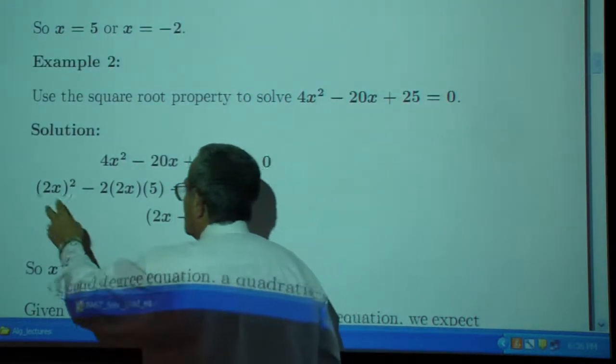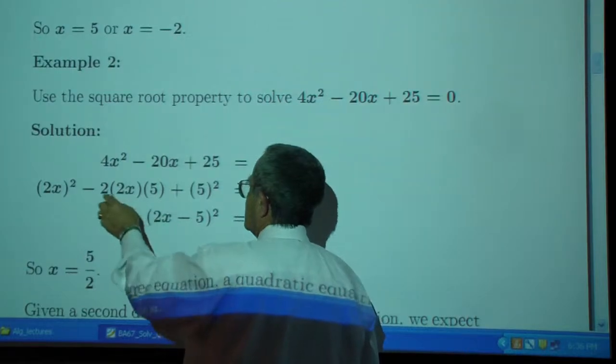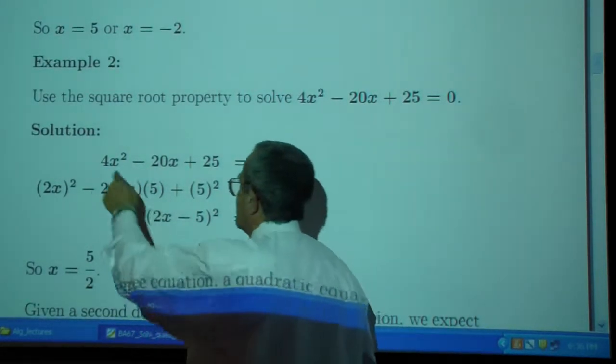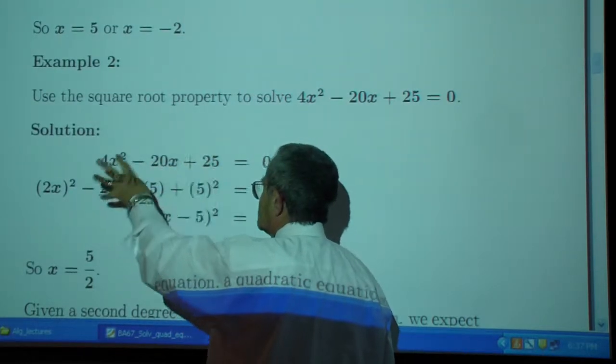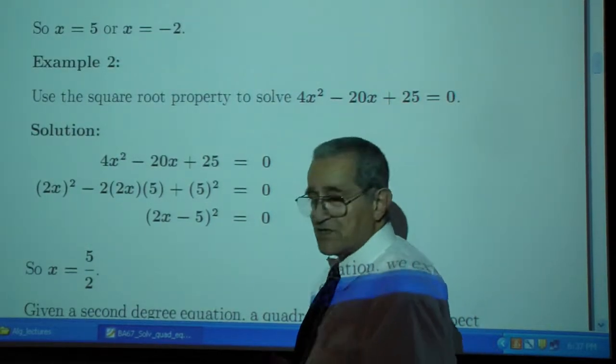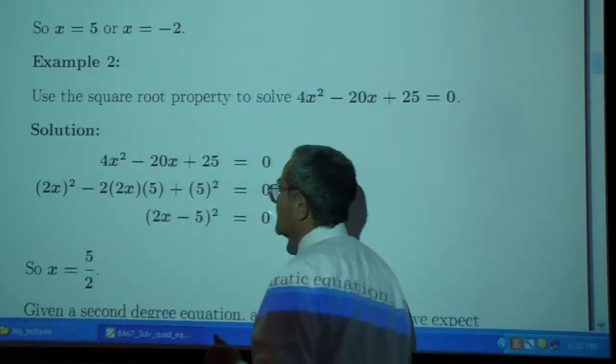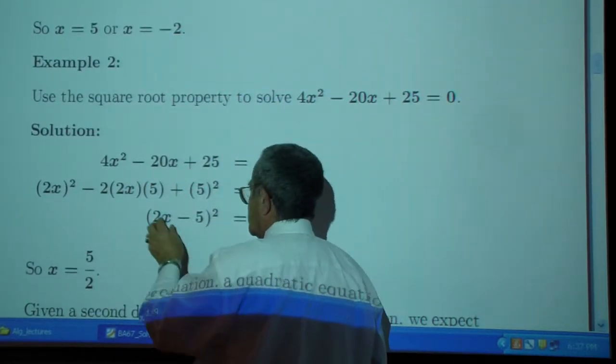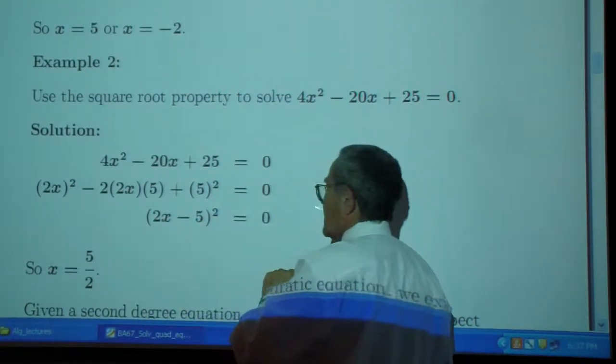So 2 times 2x times 5, that's 20. Yes, it is. This is in the form of a squared minus 2ab plus b squared, which we learned is a minus b quantity squared.